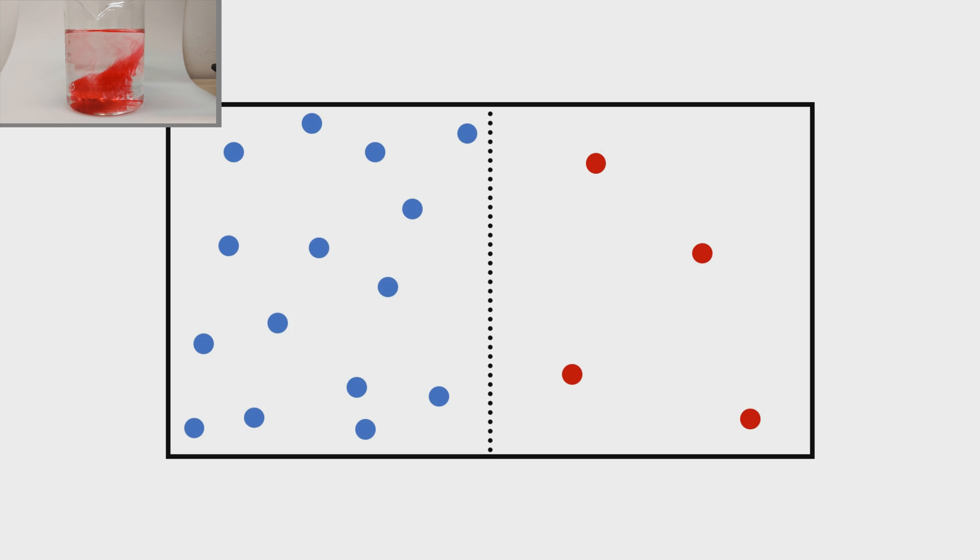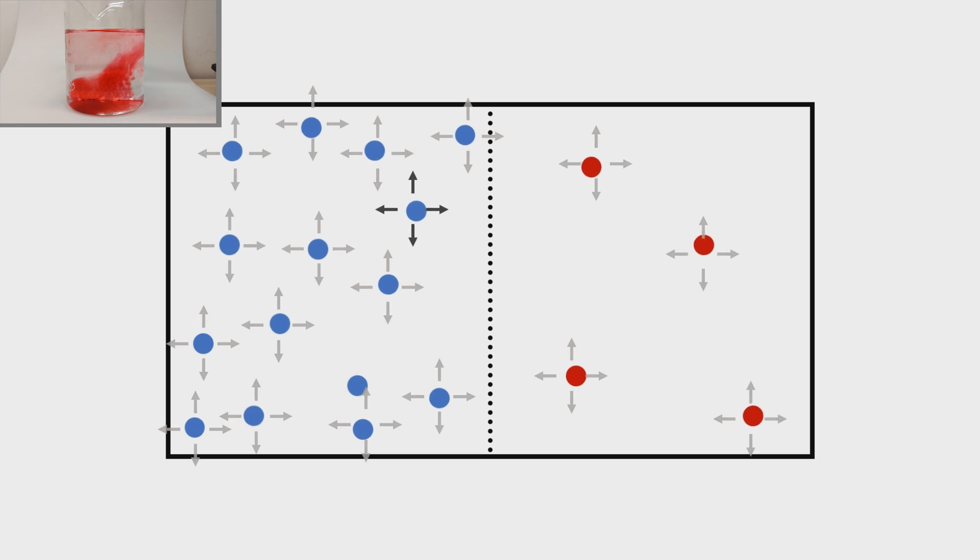So, what is diffusion? Suppose we have two boxes, each filled with balls of a different color. Let's say that each ball is allowed to move inside its box in a random direction. If all of them are allowed to move this way, the location of individual balls will vary over time, but their density will not.